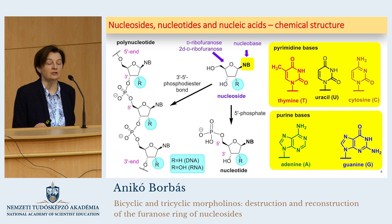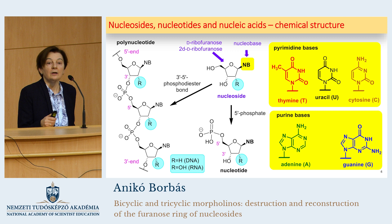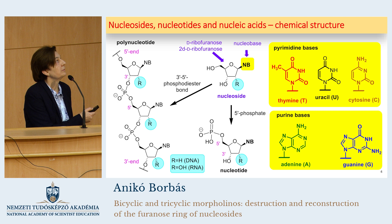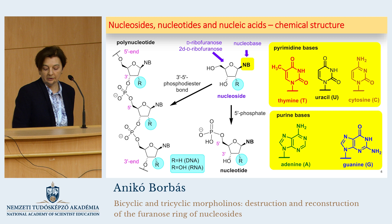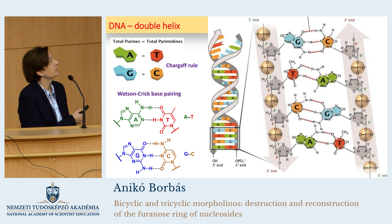We know that these compounds are polymers. The monomeric units of these polymers are the nucleosides, which are composed of a sugar — a pentose sugar unit, the ribofuranose or 2-deoxyribofuranose — connected to pyrimidine or purine bases. These monomers are linked via a phosphodiester bond to form the polymer compounds. We also know that in the DNA double helix, the two strands are coupled to each other by hydrogen bonds between the purine and pyrimidine bases.